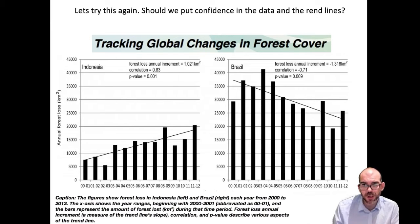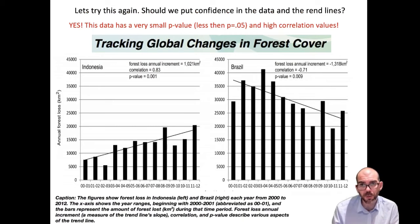So let's return to this graph. Should I have confidence in these trend lines? Can I be confident that this data is representing an actual correlation and that it's confirmed by the p-values? Yes! If I look at my p-values, they are very, very small. 0.001 for Indonesia, 0.009 for Brazil. And my correlations match. On the left, I have a correlation of 0.83. That's a strong correlation and it's positive going upward. Whereas for Brazil, I have a strong correlation, 0.71. Remember zero is scattered everywhere. One is tightly together and associated in a line. And since my correlation is negative, I can see the downward trend.